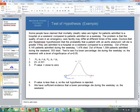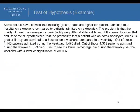Let's go through one more example. Some people have claimed that mortality rates are higher for patients admitted to a hospital on weekends compared to patients admitted on a weekday. The problem is that the quality of care in an emergency care facility may differ at different times of the week. Doctors Bell and Redelmeier hypothesized that the probability that a patient with an aortic aneurysm will die is greater if they are admitted to a hospital on the weekend compared to the weekday. Out of those 4,145 patients admitted during the weekday, 1,476 died. Out of those 1,309 patients admitted during the weekend, 553 died. Test to see if there's a lower percentage that died during the weekday versus the weekend with a level of significance of alpha equal to 0.05.